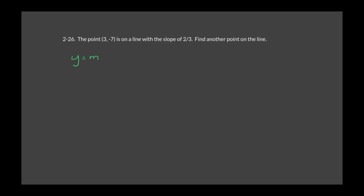Problem 2-26: the point (3, negative 7) is on a line with a slope of 2 thirds. Find another point on the line. First, find the equation using Y equals MX plus B. Plugging in: negative 7 equals (2 thirds)(3) plus B. 3 times 2 over 3 is 2. So negative 7 equals 2 plus B, meaning B equals negative 9. The equation is Y equals (2 thirds)X minus 9.